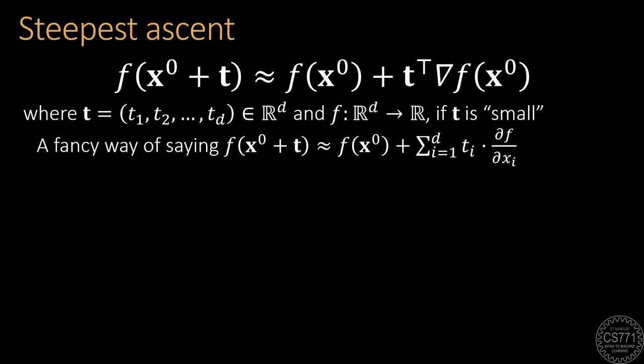Actually, this result makes a lot of sense because it basically tells us that the difference in the old and the new function values will need to add up the contributions from all the coordinates. What is really nice is that the contribution of each coordinate is calculated the same old way by multiplying the movement along that coordinate with the partial derivative along that coordinate.